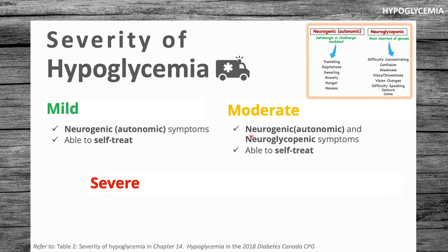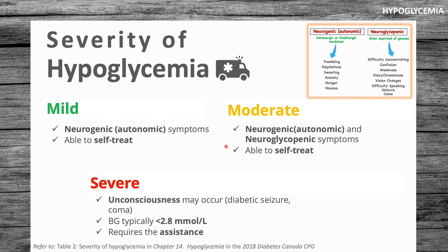In moderate hypoglycemia, symptoms can be both neurogenic and neuroglycopenic — including confusion, dizziness, weakness, and difficulty concentrating — and the person is still generally able to self-treat. With severe hypoglycemia, it may include neurogenic and neuroglycopenic symptoms, and the person can also be unconscious, with seizure or coma possible. Glucose levels are typically less than 2.8 millimoles per liter, and the person will need assistance.